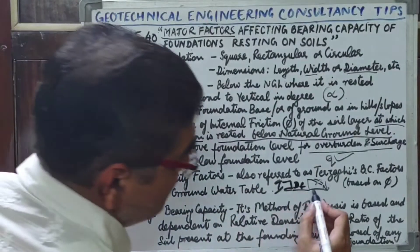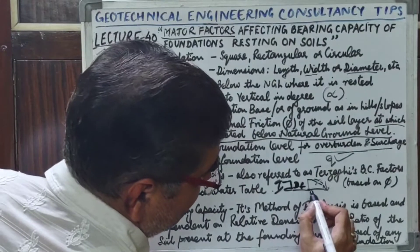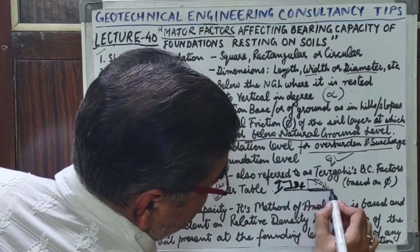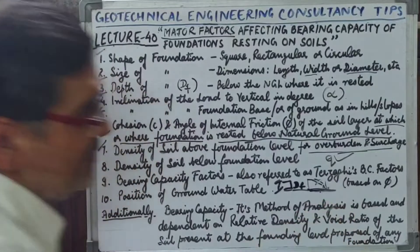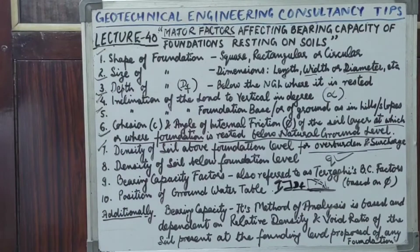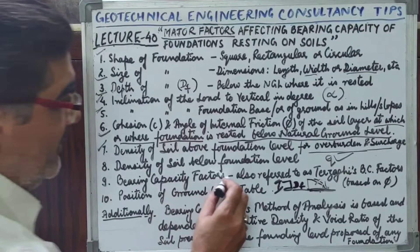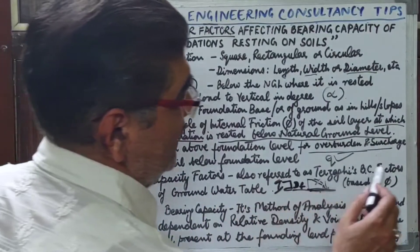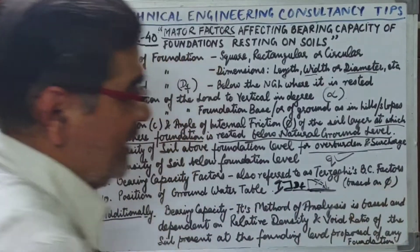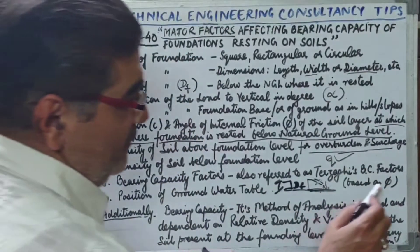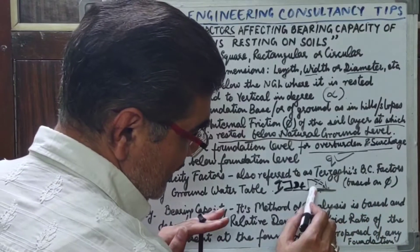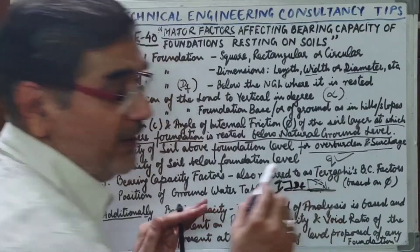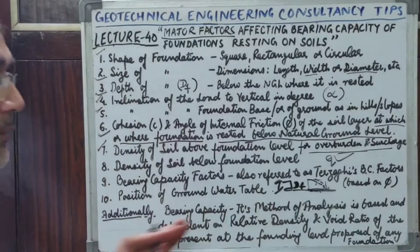The density below the foundation level is what we record in our prepared results sheet. The bearing capacity factors, referred to as Terzaghi's bearing capacity factors, depend upon the angle of internal friction found at this very particular founding level.